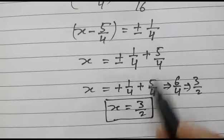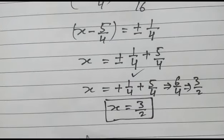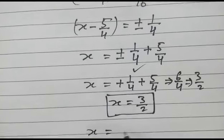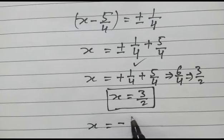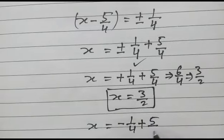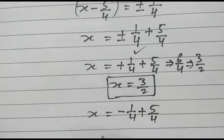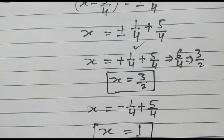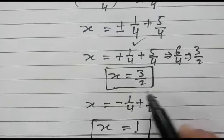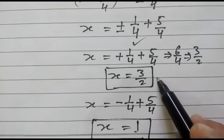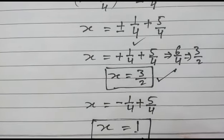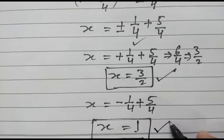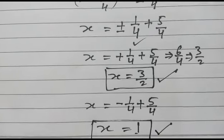If we take the minus case: x equals minus 1/4 plus 5/4, x will be equal to 4/4, which is 1. So the two roots of this equation are x equals 3/2 and x equals 1. Thank you friends.